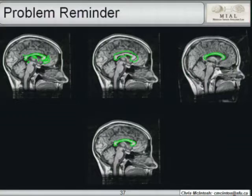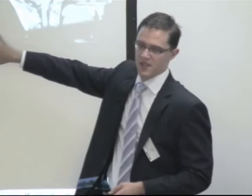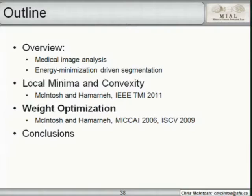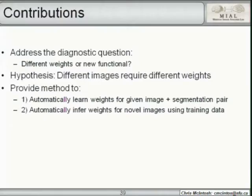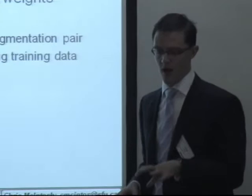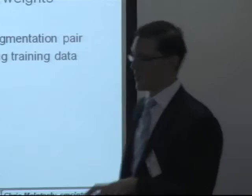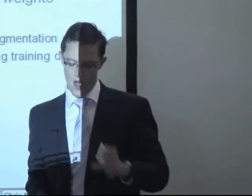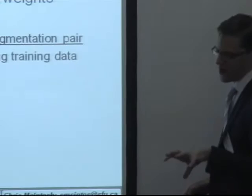The weight optimization work addresses the diagnostic question of whether different weights or a new functional are needed. Our hypothesis is that different images actually require different weights. We propose a method to automatically learn the optimal weights for a given image-segmentation pair, and then a method to automatically infer weights for novel images given that training phase.